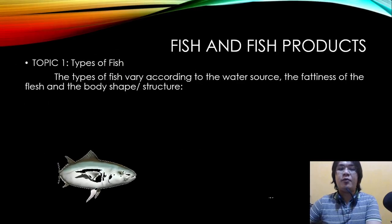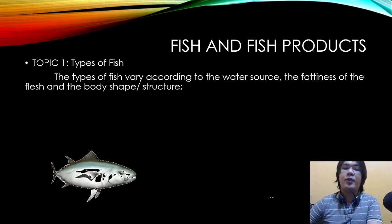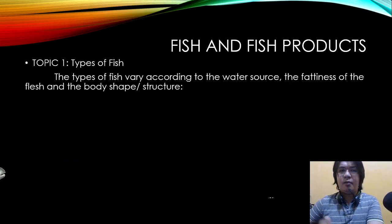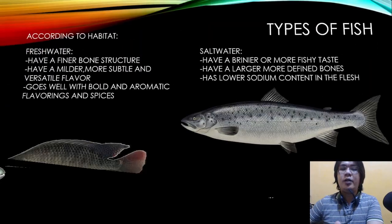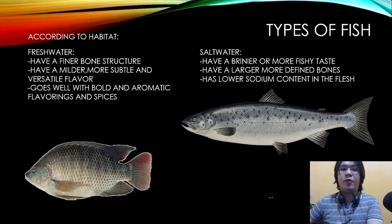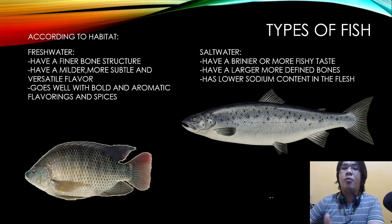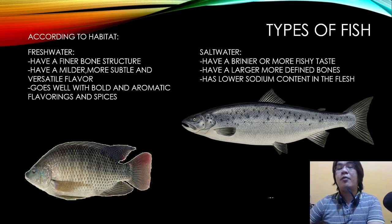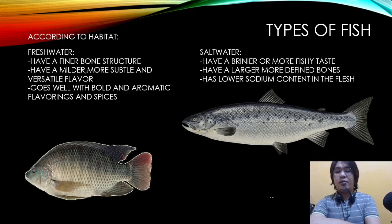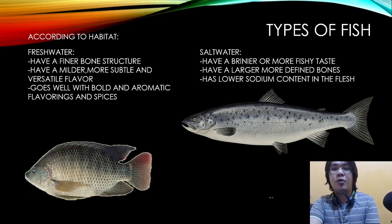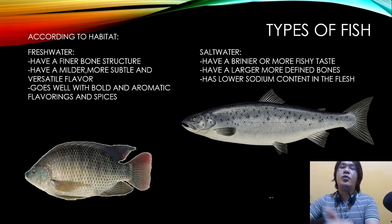There are different types of fish. The types vary according to water sources, the fatness of the flesh, and the body shape or structure. Fish can be classified according to habitat. Freshwater fish have a fine bone structure, a milder and more subtle flavor, and go well with bold and aromatic flavorings and spices. Saltwater fish have a rainer or more fishy taste and have larger, more defined bones.